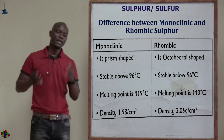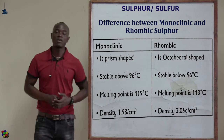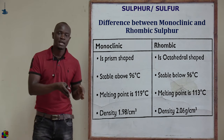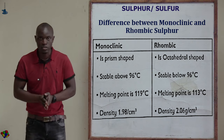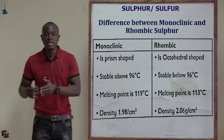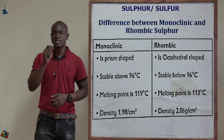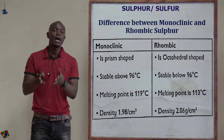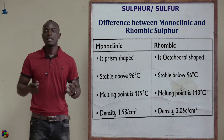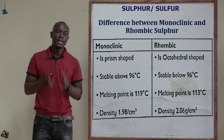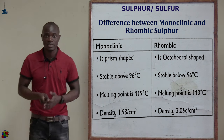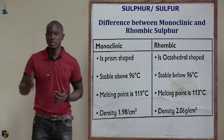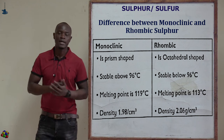The differences between monoclinic and rhombic sulfur: monoclinic sulfur is hexagonal prism-shaped (six edges), while rhombic sulfur is octahedral-shaped (eight edges). Monoclinic sulfur is stable above 96 degrees Celsius, while rhombic sulfur is stable below 96 degrees Celsius. The melting point of monoclinic is 119 degrees Celsius versus 113 degrees Celsius for rhombic. The density of monoclinic is 1.98 g/cm³ while rhombic is 2.06 g/cm³.